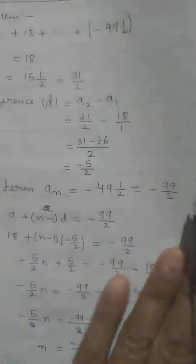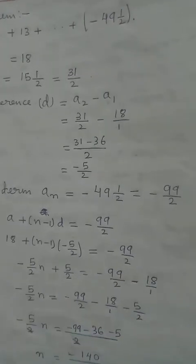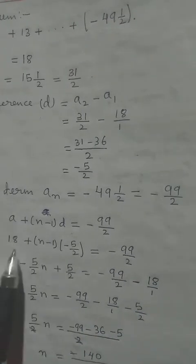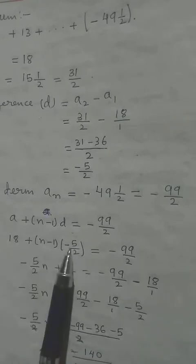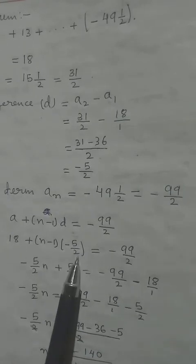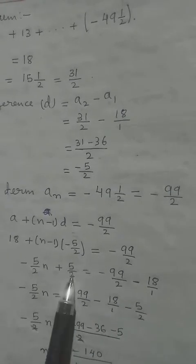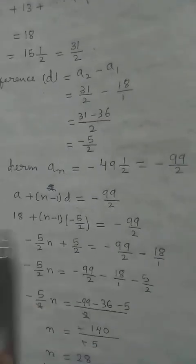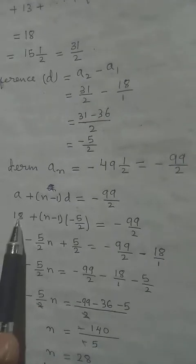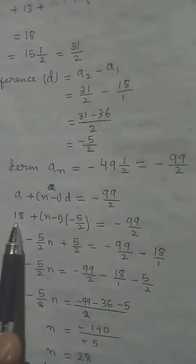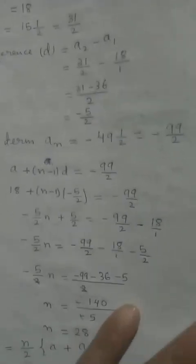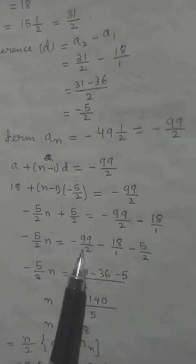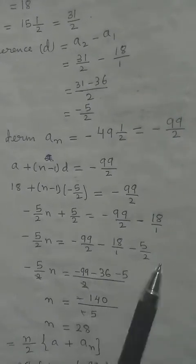We apply the A_N formula with A = 18 and D = −5/2. Setting A_N equal to the last term and finding LCM to combine the fractions, then transferring terms without N to the other side.